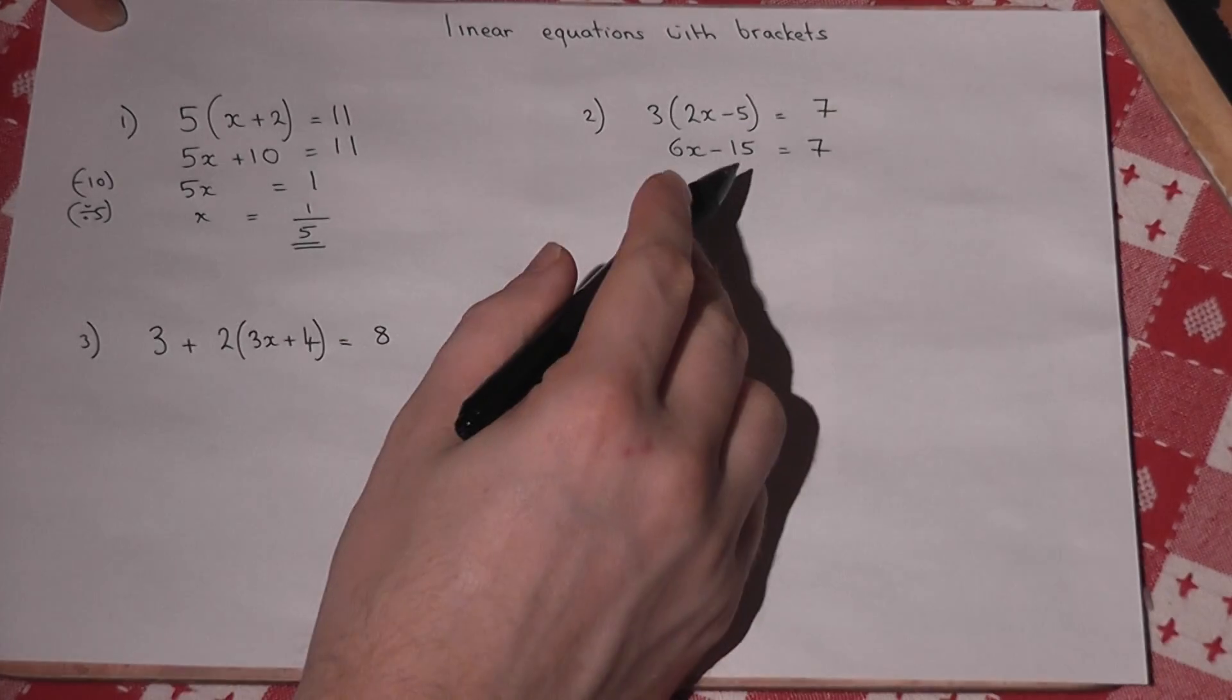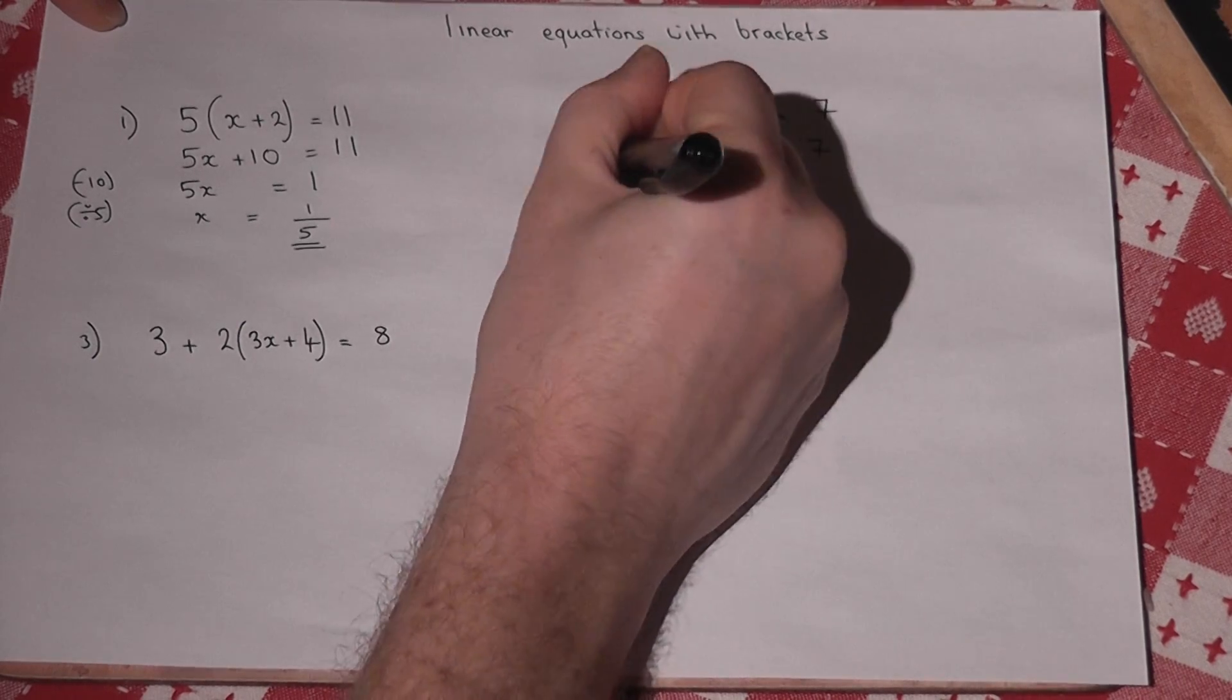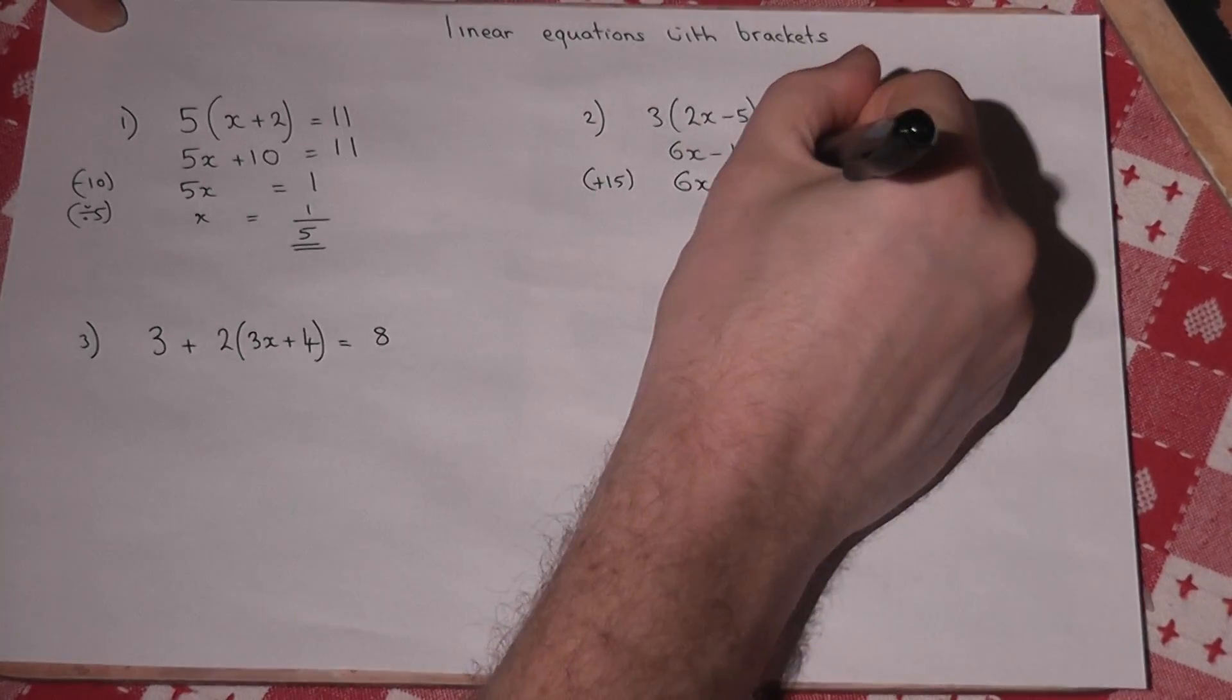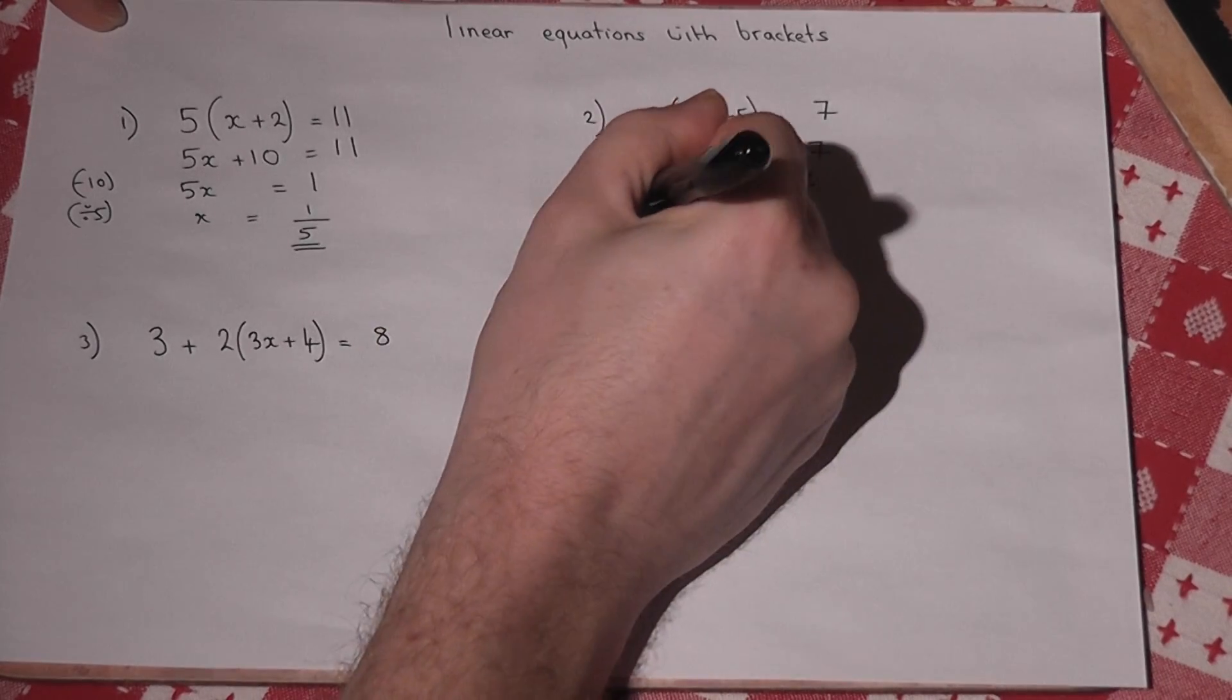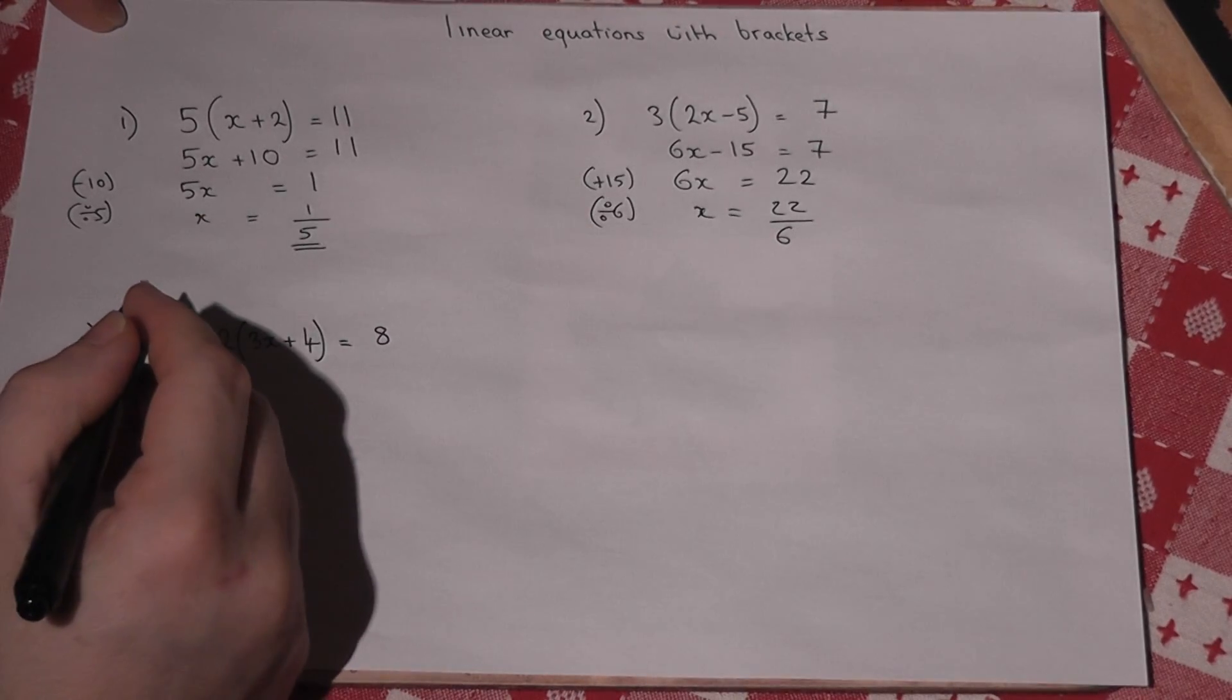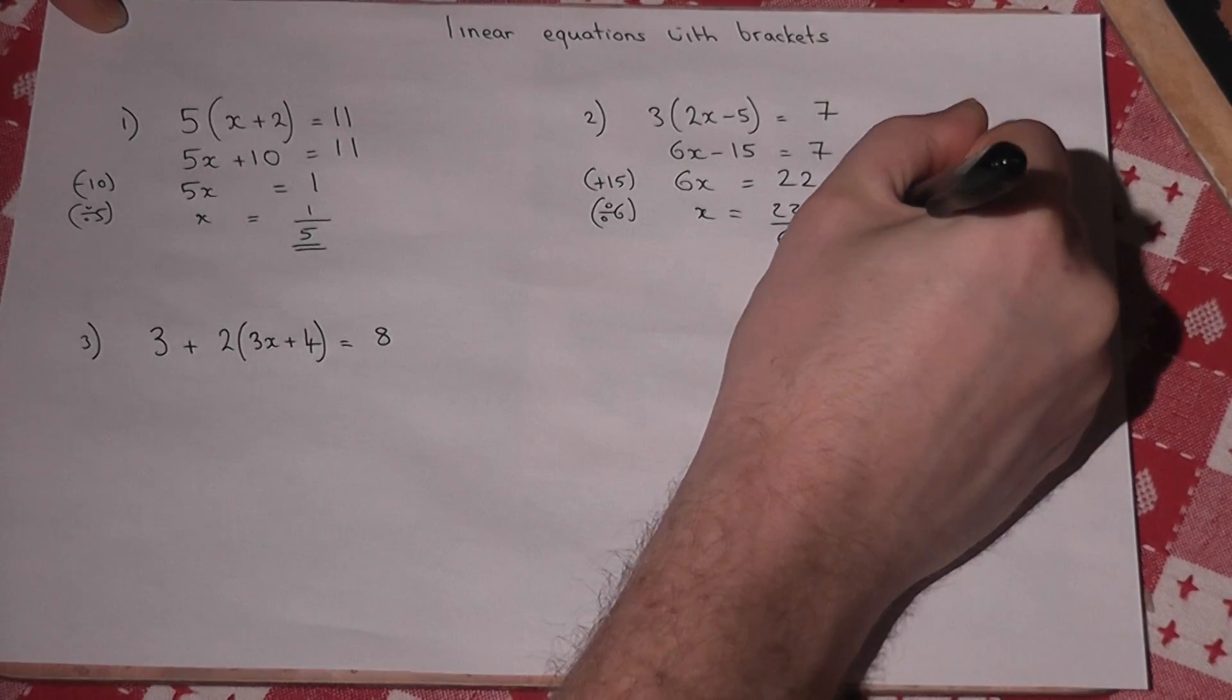I then must add the 15 to cancel the minus 15. So 6x will equal 7 plus 15, which is 22. I then divide by the 6. So x will equal 22 over 6, which cancels down to 11 over 3.